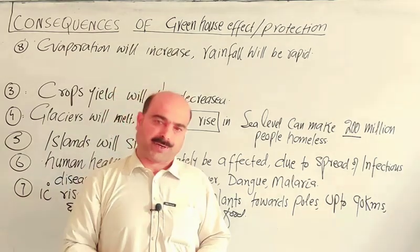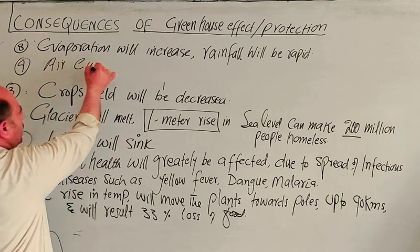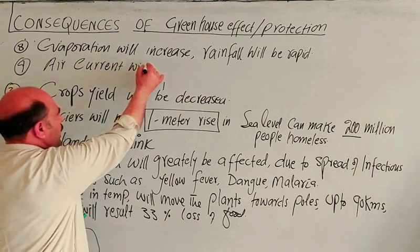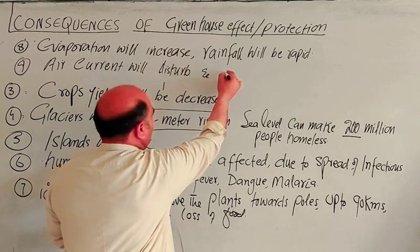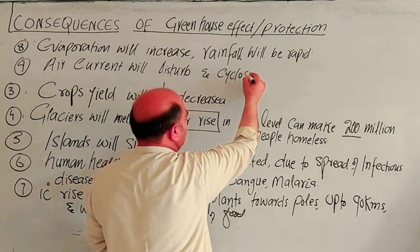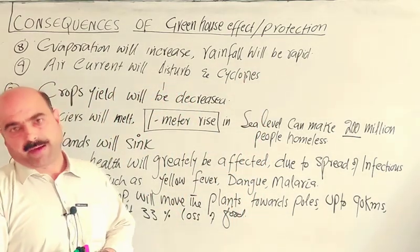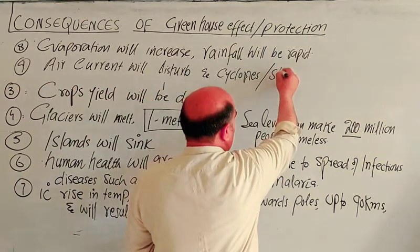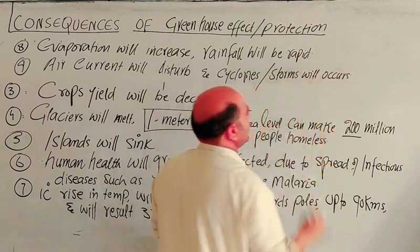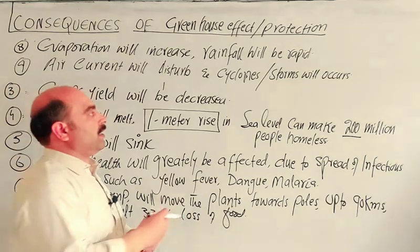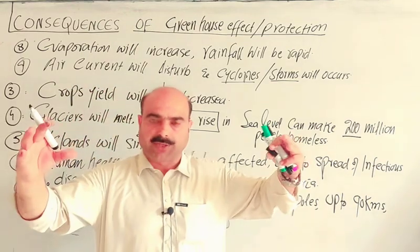The air currents will be disturbed and storms will occur. Disturbed air currents lead to cyclones and high-pressure weather events. These atmospheric disturbances are a direct consequence of the temperature imbalances created by the greenhouse effect.